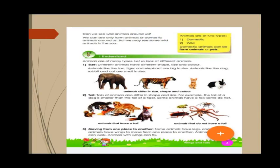Today, we are going to learn about animals and their types based on size, shape, and color. We have already covered domestic and wild animals in our last session. Animals are of many types — let us look at different animals. Different animals have different shapes, sizes, and colors.